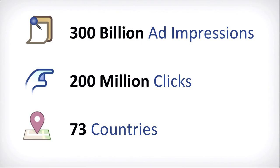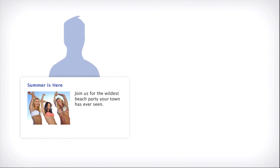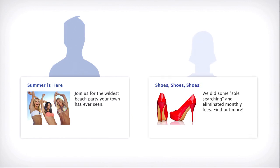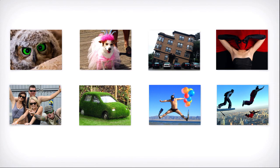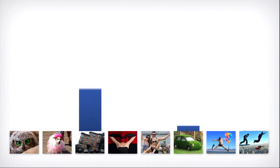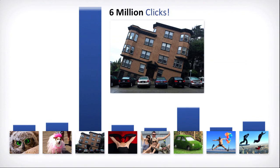Now, some of the results were fairly obvious. You put some beautiful woman, and guys are going to click. You put up some shiny shoes, and females will click. But we were looking for something abnormal — images that appeal to people across ages, genders, and countries. Take a look at the eight images on the screen. Which of these images do you think performed the best? Surprisingly, the Tilted House performed much better than any other image, and actually resulted in over six million clicks across advertisers, across ages, genders, and countries.